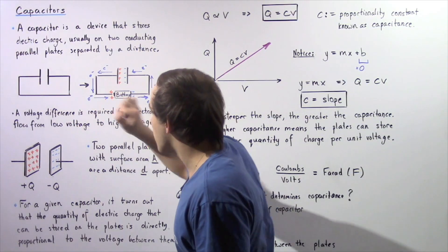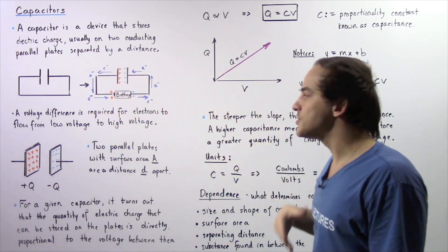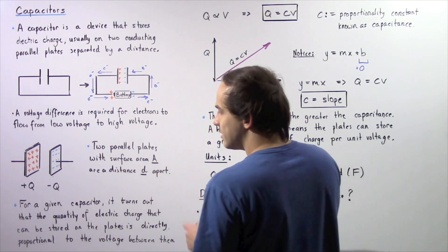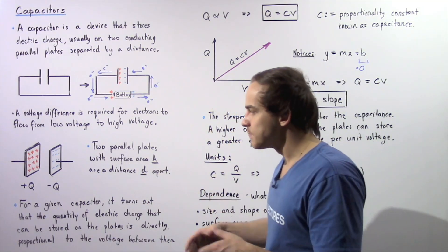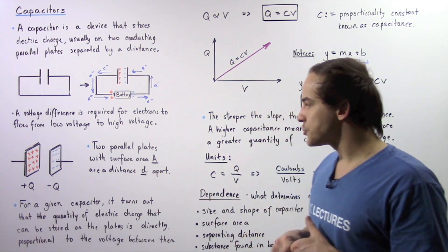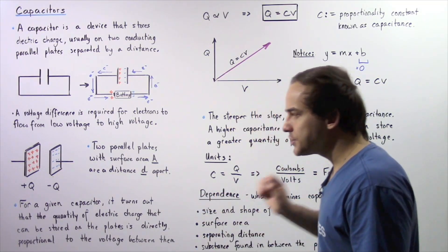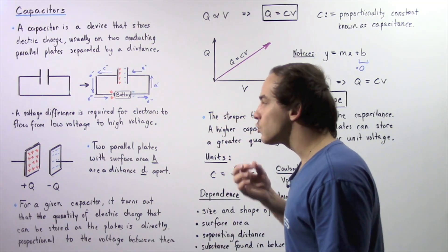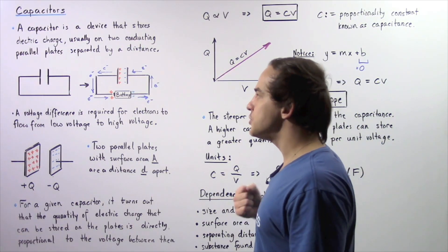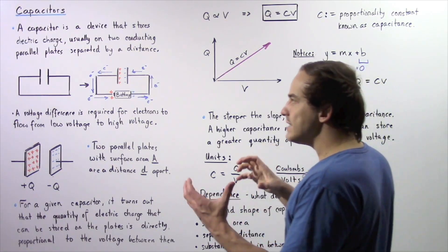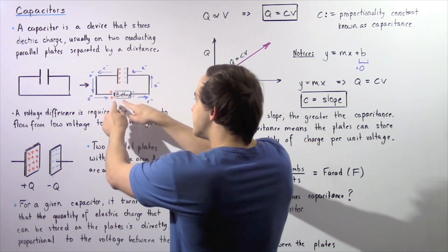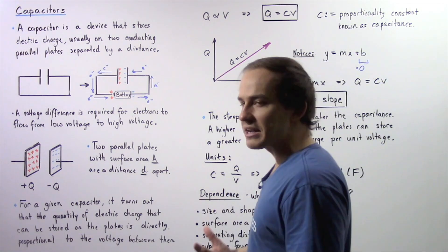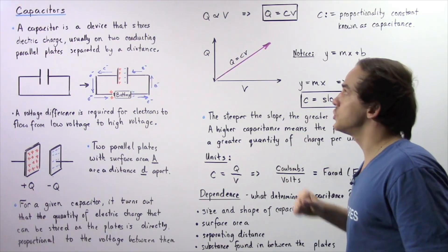Our two parallel plates have a surface area given by A and are placed a distance D apart. These two quantities will become important in future lectures. For any given capacitor, the quantity of electric charge that can be stored on the plates is directly proportional to the voltage between them. So if we increase the battery voltage, the capacitor will store more electric charge.